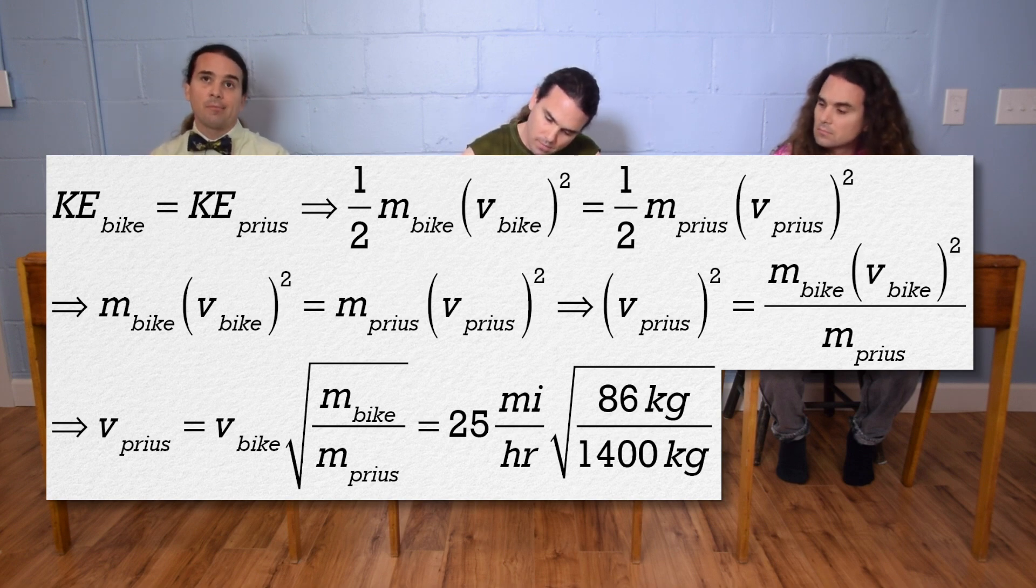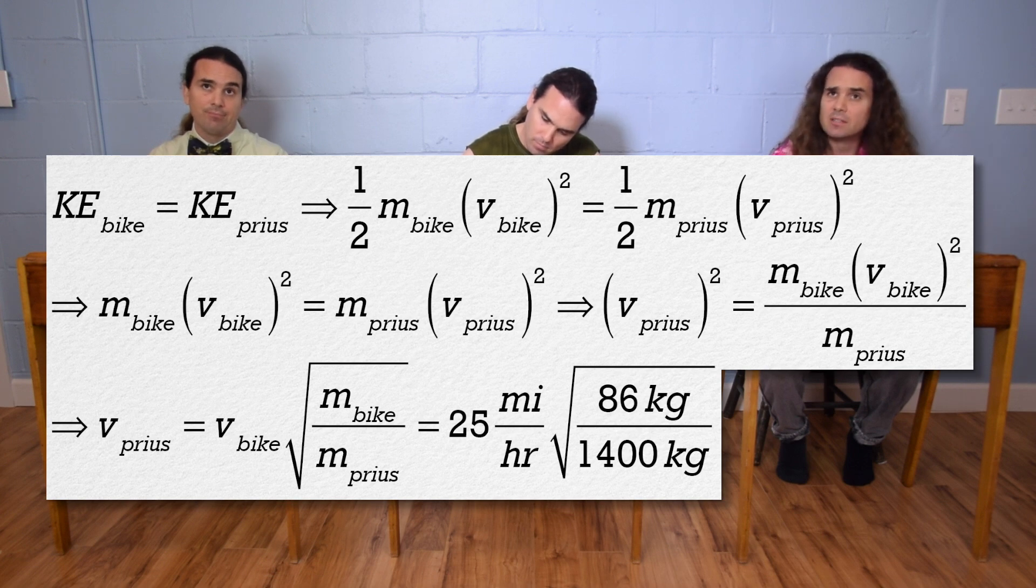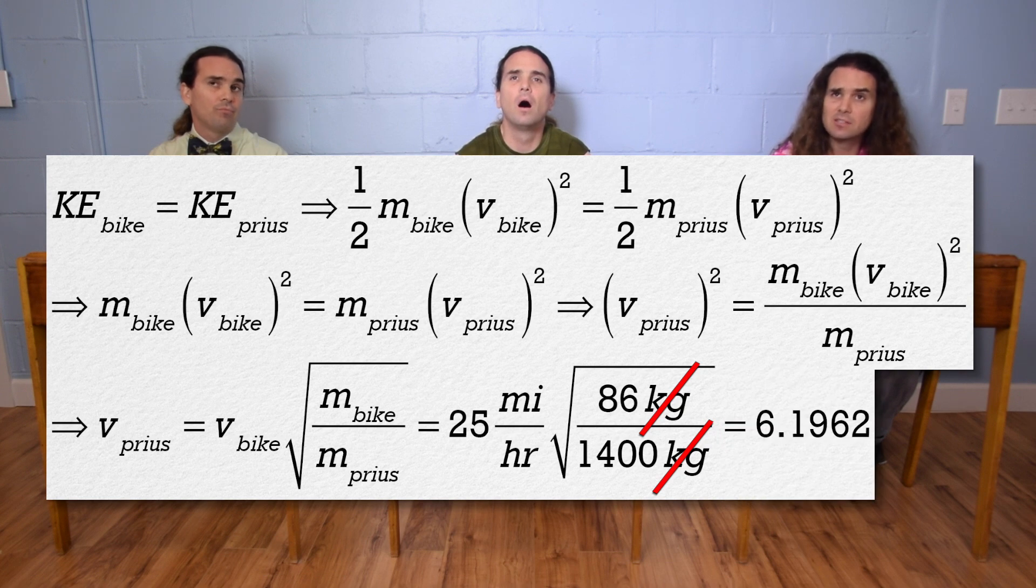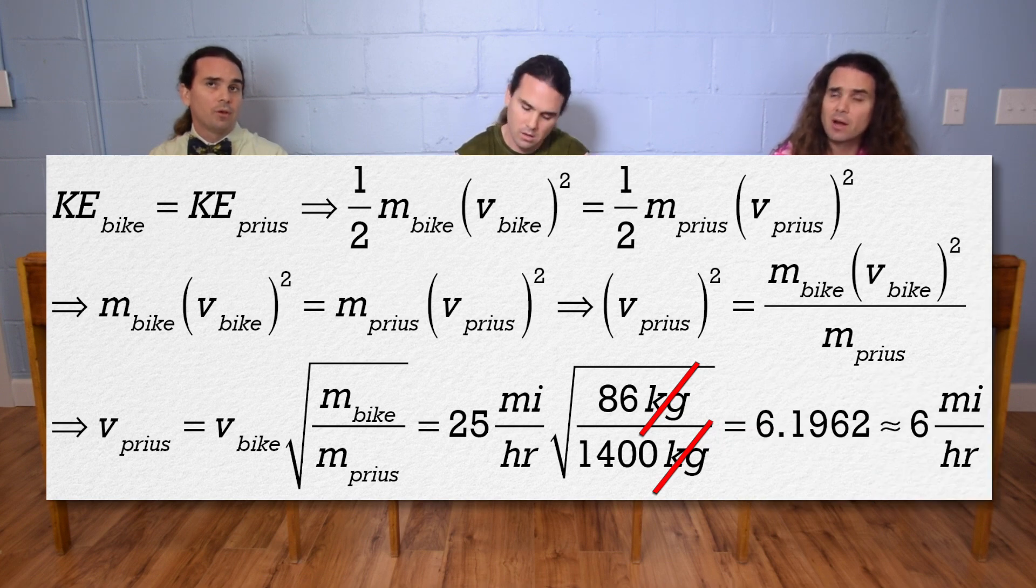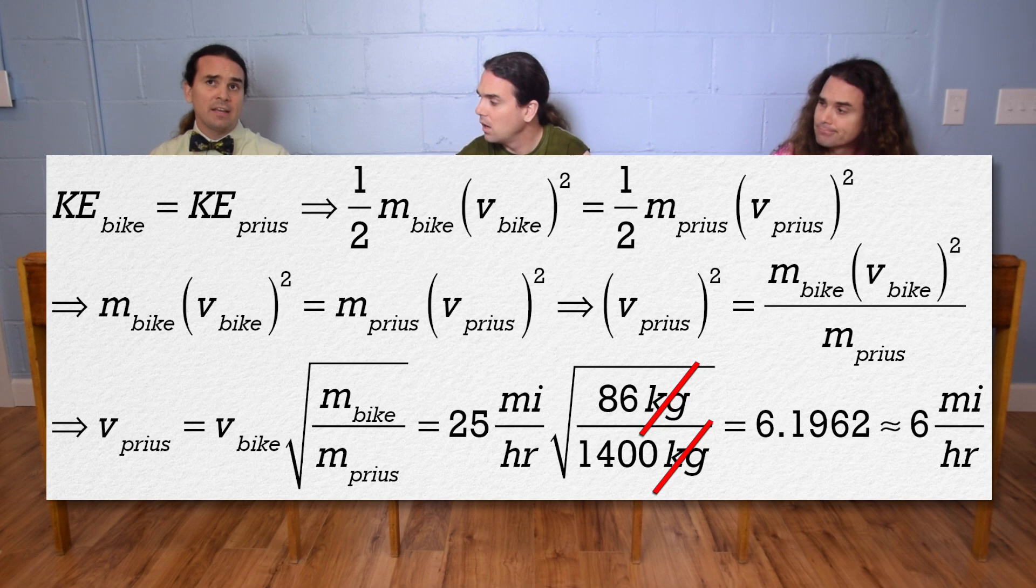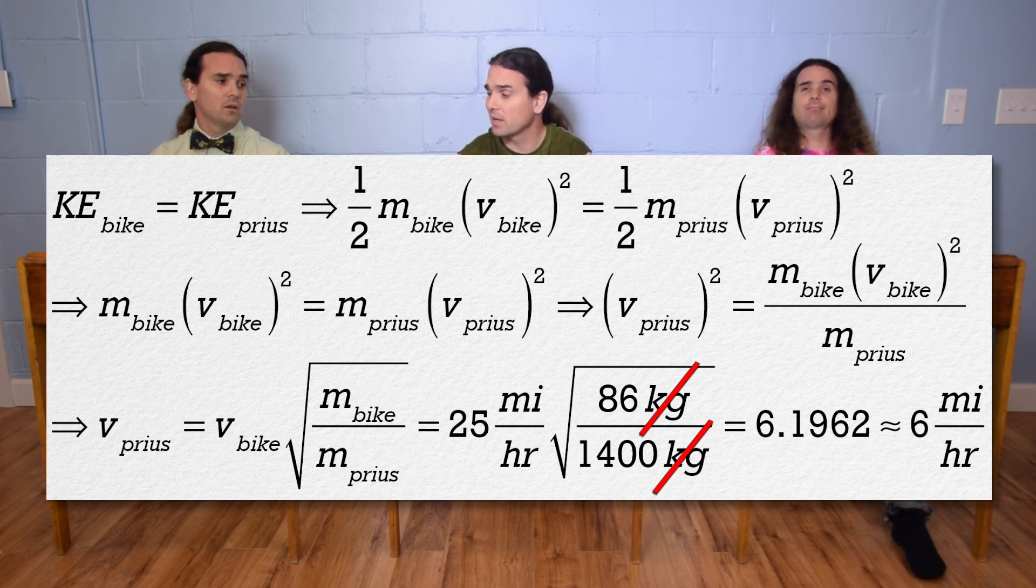We forgot to convert from miles per hour to meters per second. Actually, we don't need to because the kilograms cancel out and we are left with 6.1962 or 6 miles per hour. Okay, but shouldn't our answer have two significant digits? Yes, however, the Prius speedometer does not display tenths of a mile per hour. Okay, that makes sense.